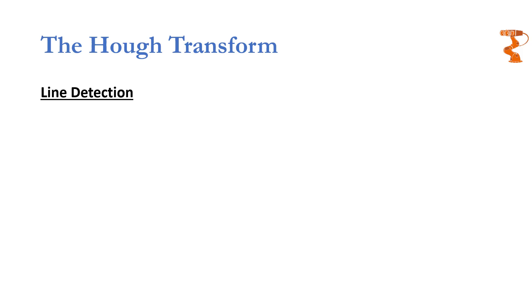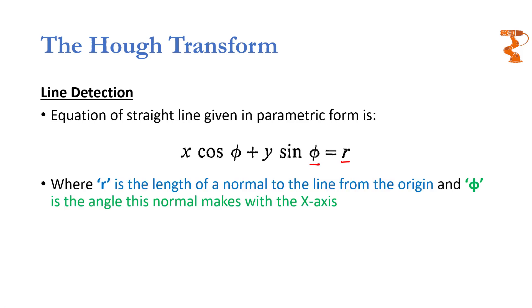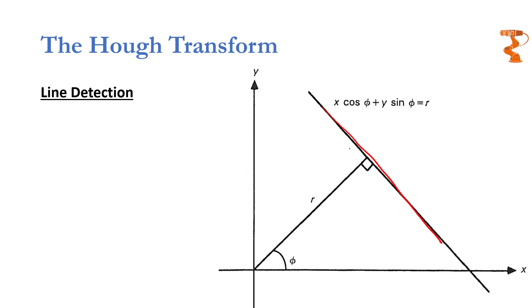I am going to give an example of line detection and point towards how other types of curves can be found. A line can be written in a parametric form using two new parameters: R and Phi. R and Phi are the length of the normal to the line from the origin and the angle which this normal makes with the x-axis, respectively. For example, if you consider this line, R would be the distance — the length of the normal from the origin to the line — and the angle this normal makes with the x-axis would be Phi.